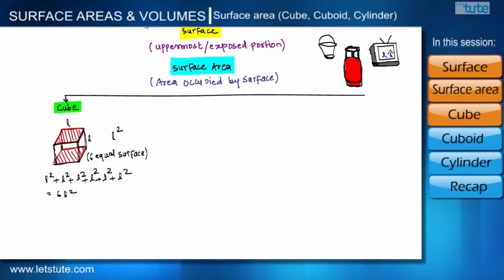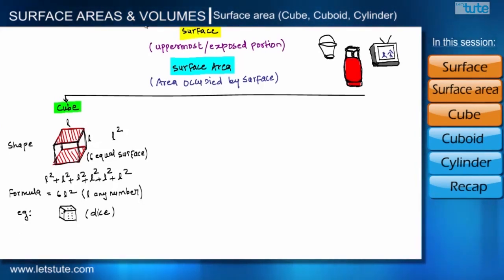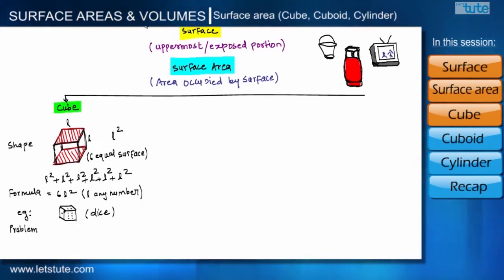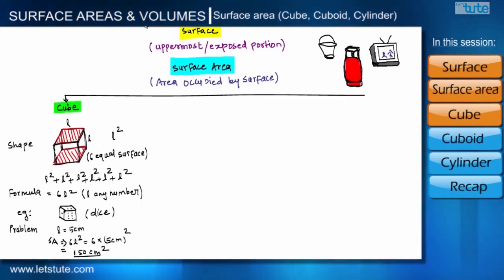So 6L² is the total surface area of a cube having side length L, where L can be any number. The shape of a dice is a real-life example of a cube — it has six surfaces, all equal in area and square in shape. Let us solve a problem: find the total surface area of a cube having side length 5 centimeters. Using the formula 6L², we get 6 × 5² = 150 cm².